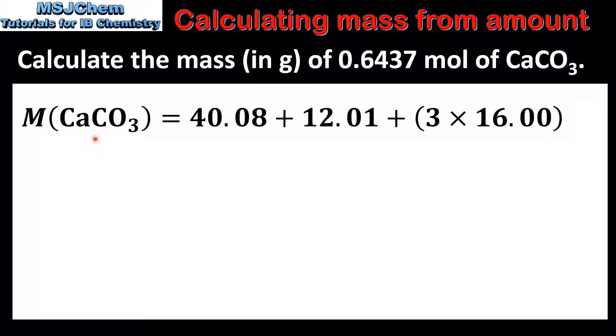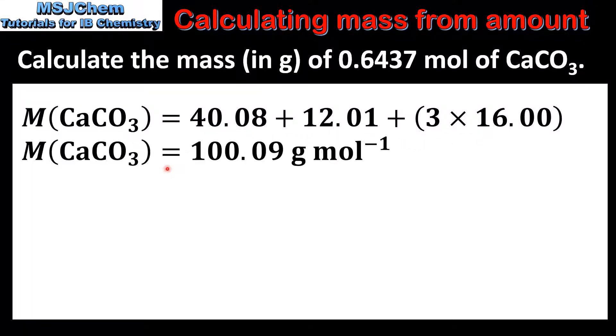The first step is to determine the molar mass of calcium carbonate. Here we have the relative atomic masses of calcium, carbon and oxygen. When we add these together we get a molar mass of 100.09 grams per mole.